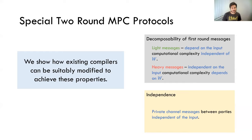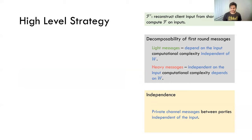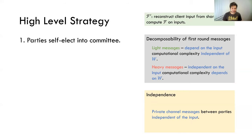In our work, we actually show that you can take existing compilers and suitably modify them to achieve these properties. Now, given a special two-round MPC, how are you actually going to make it work? Here is the high-level strategy. In the first step, before the start of the first round, parties toss appropriately parameterized coins and self-elect into committees. This is totally fine in the semi-honest setting. Parties toss a coin, and if it comes up heads, they decide to be a server. Of course, nobody else yet knows who the other servers are.